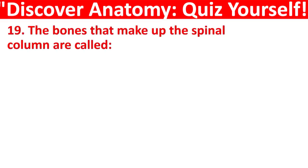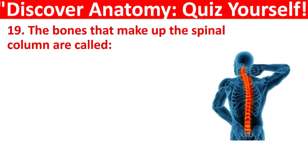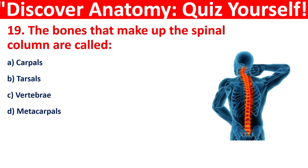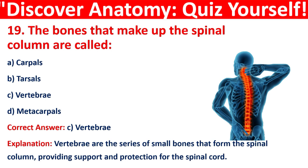Question 19: The bones that make up the spinal column are called? Your options are: Carpals, Tarsals, Vertebrae, or Metacarpals. The correct answer is C, that is Vertebrae. The vertebrae are the series of small bones that form the spinal column, providing support and protection for the spinal cord.